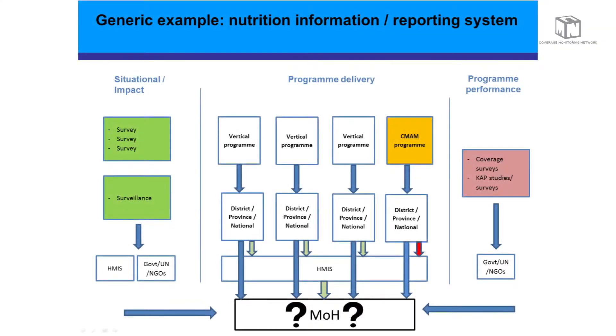For this presentation, and really in the conference, we've been mainly focusing on these elements of data. This is a kind of generic example of a nutrition information reporting flow in a country, building off the previous slide. The situational impact data is gathered through surveys and surveillance, fed into the HMIS and up through government channels and UN/NGO channels.